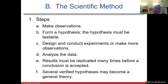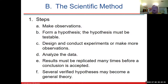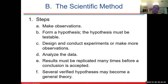You have to be able to design and conduct experiments or make more observations, and then you analyze the data. So I change out the batteries — if the flashlight turns on, I'm pretty much done. If it doesn't turn on, then I have to come up with an alternative hypothesis. The results must be replicated many times before a conclusion is accepted. You can't do anything with an n of one — that doesn't make any sense and no one will believe that. You have to do things many, many times.